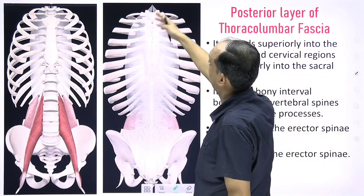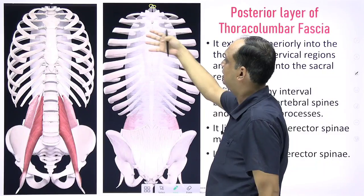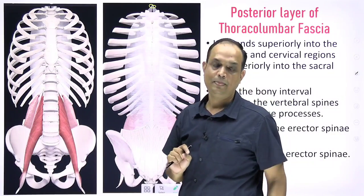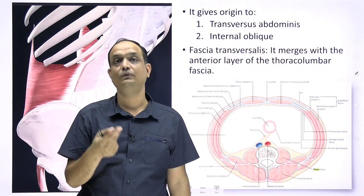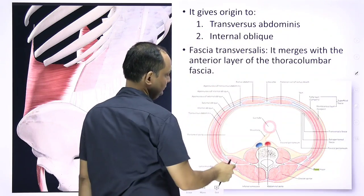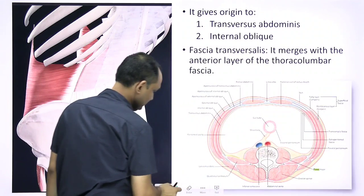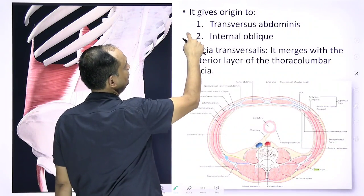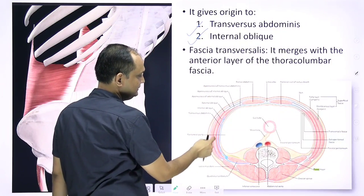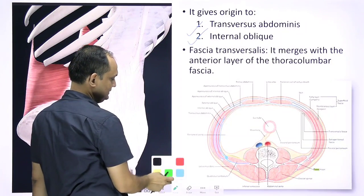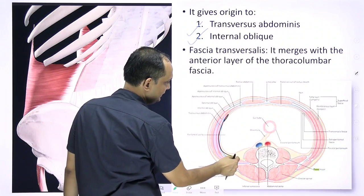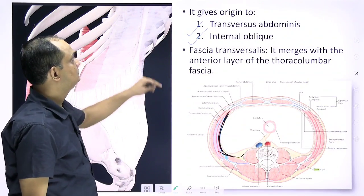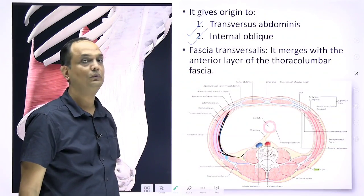The posterior layer is a thick fascia extending even into the neck. When the anterior and middle layers meet at the lateral end of the quadratus lumborum, from this lateral end arise the transversus abdominis and internal oblique muscles. On the inner side, the fascia transversalis is continuous with the thoracolumbar fascia posteriorly — specifically, the fascia transversalis merges with the anterior layer of the thoracolumbar fascia.